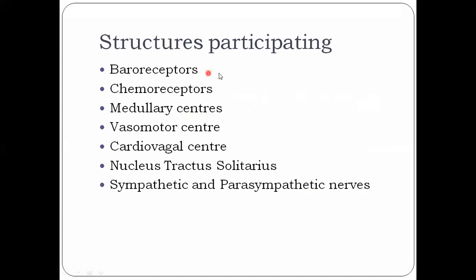The structures participating in short-term regulation include baroreceptors, chemoreceptors, medullary centers like the vasomotor center, cardiovascular center, and nucleus tractus solitarius, as well as sympathetic and parasympathetic nerves.